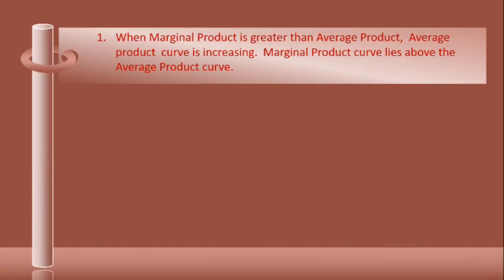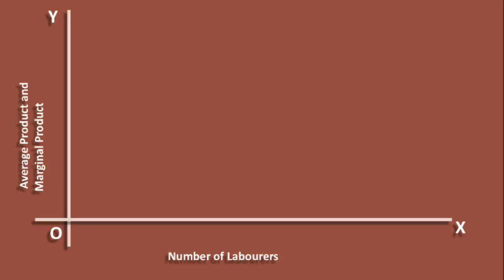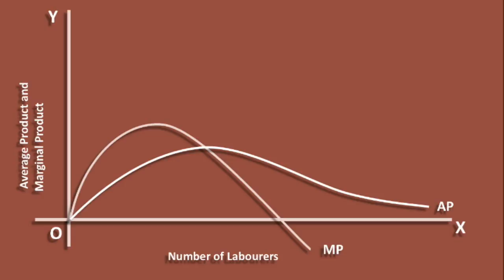We shall examine the first relation. Along the x-axis, the number of laborers is measured, and along the y-axis, average product and marginal product are measured. MP is the marginal product curve and AP is the average product curve. When three laborers are employed, average product is 4 units and marginal product is 9 units. Since marginal product is greater than average product, the average product curve is increasing and the marginal product curve lies above the average product curve.